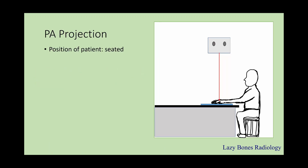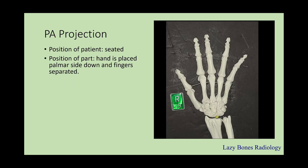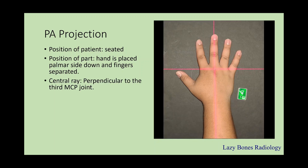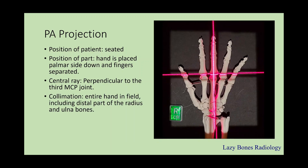PA projection. This is when the patient is seated, and the position is when the hand is placed palmar side down and the fingers are extended. The central ray is perpendicular to the 3rd MCP joint, as you can see here on the right-hand side. Make sure to collimate the entire hand and the distal part of the radius and ulna. SID is 40 inches. Make sure to label correctly.